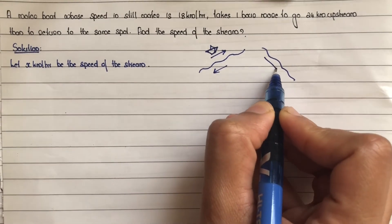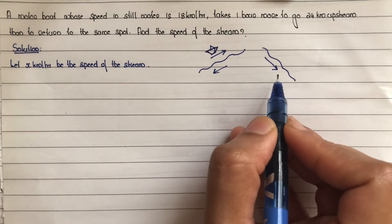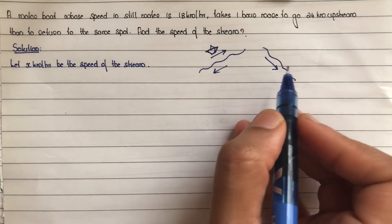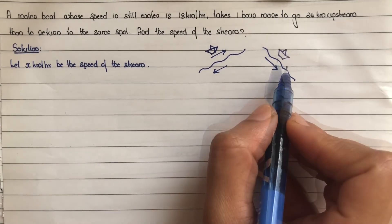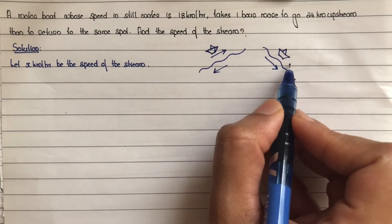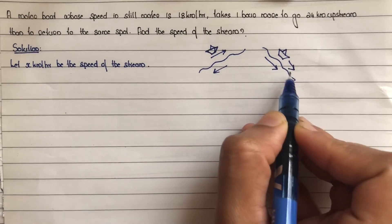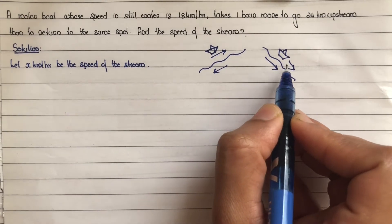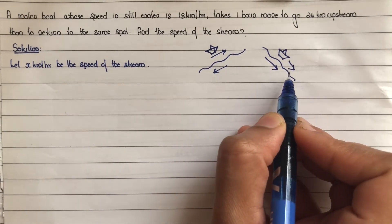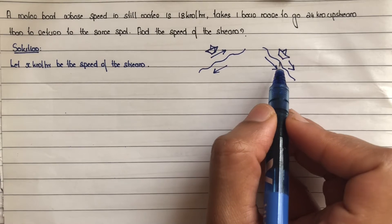Upstream flow is in the downward direction. If we move to the bottom where the stream flows, we move in the same direction — that means we move downstream.